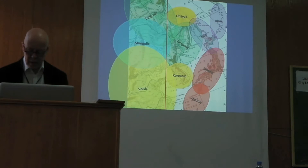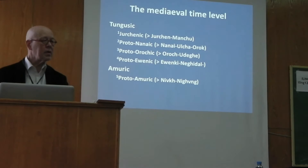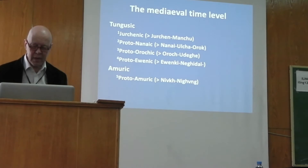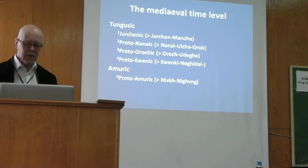As always, when we go back in time, we get fewer languages — we get the corresponding proto-languages. At the medieval time level, we have four groups of Tungusic languages: the Jurchen, the Nanai, the Orochen, and the Evenki branch, from which the modern Tungusic languages descend. We also had some kind of proto-Amuric, which was the proto-form of the Nivkh languages.